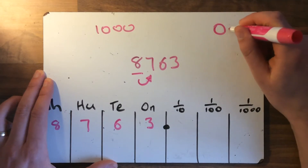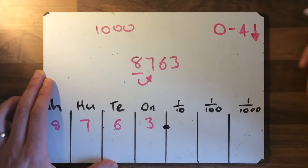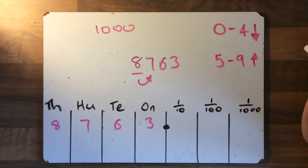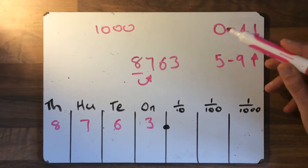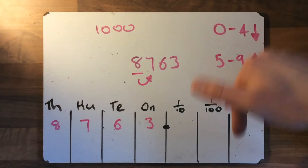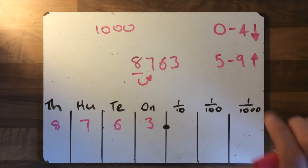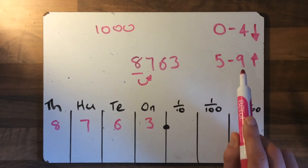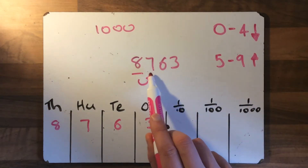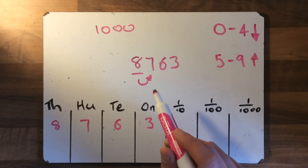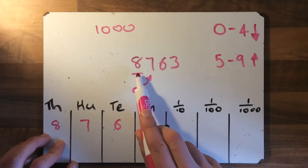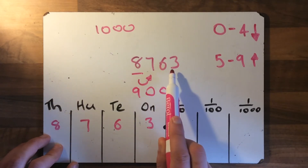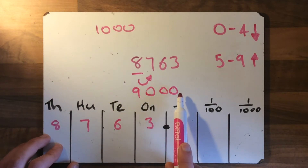Hopefully you can remember that if a number is between zero and four, the number gets rounded down. If it's between five and nine, the number gets rounded up. These are the really important things you need to remember when it comes to rounding. You can see here that this number seven comes in between five and nine, so this number is going to get rounded up. So when we do that, the underlined number goes up by one — this eight will become a nine. And then the numbers to the right of the underlined number become zeros. So this number, 8,763, to the nearest thousand is 9,000. This number has been rounded up.